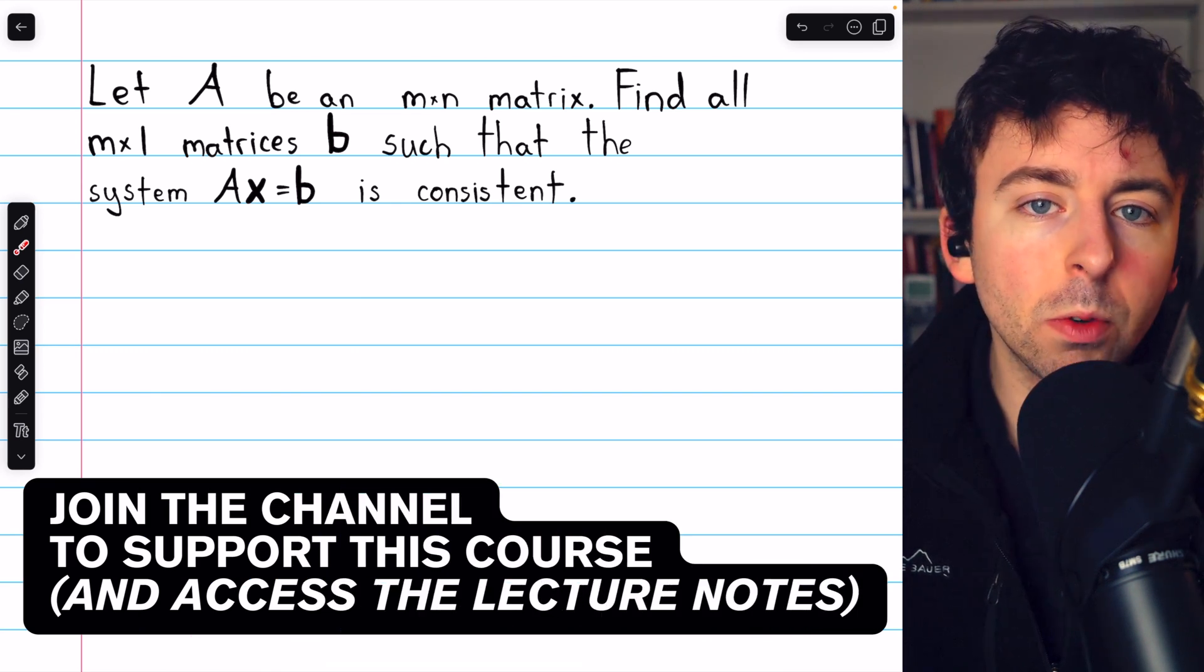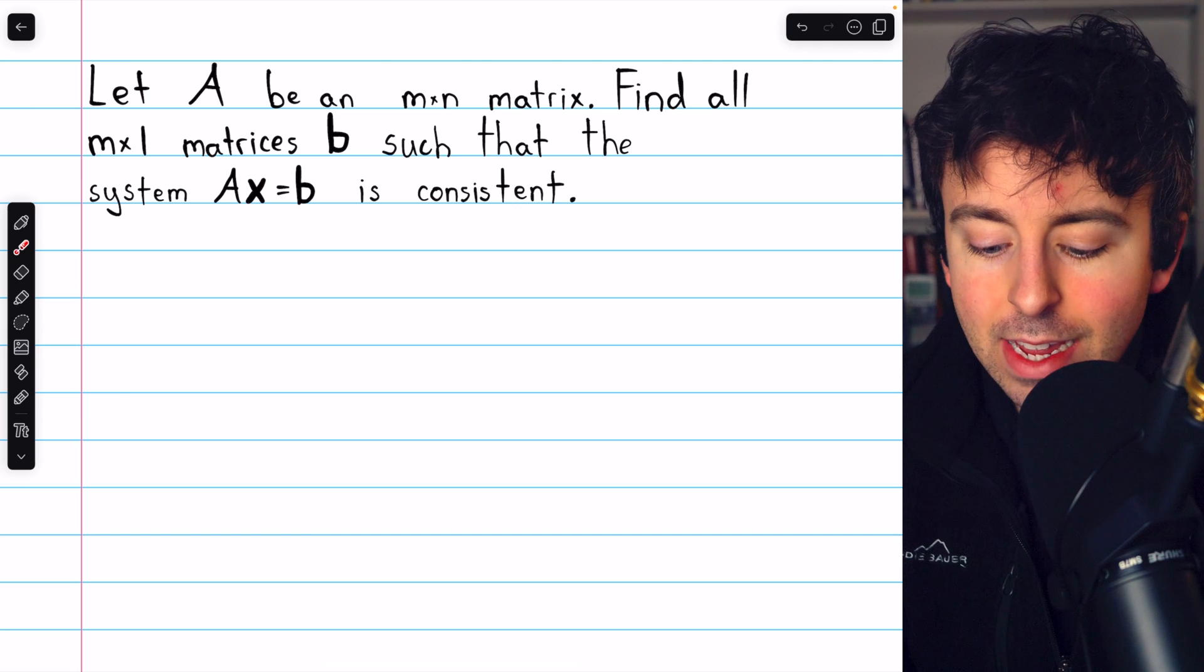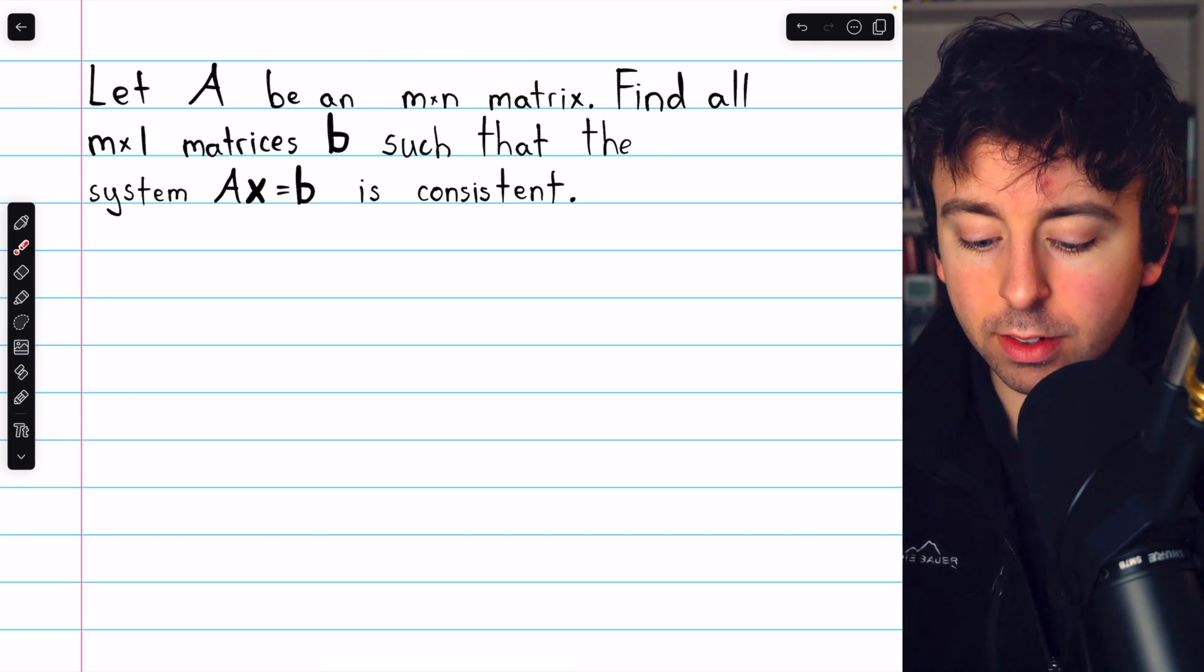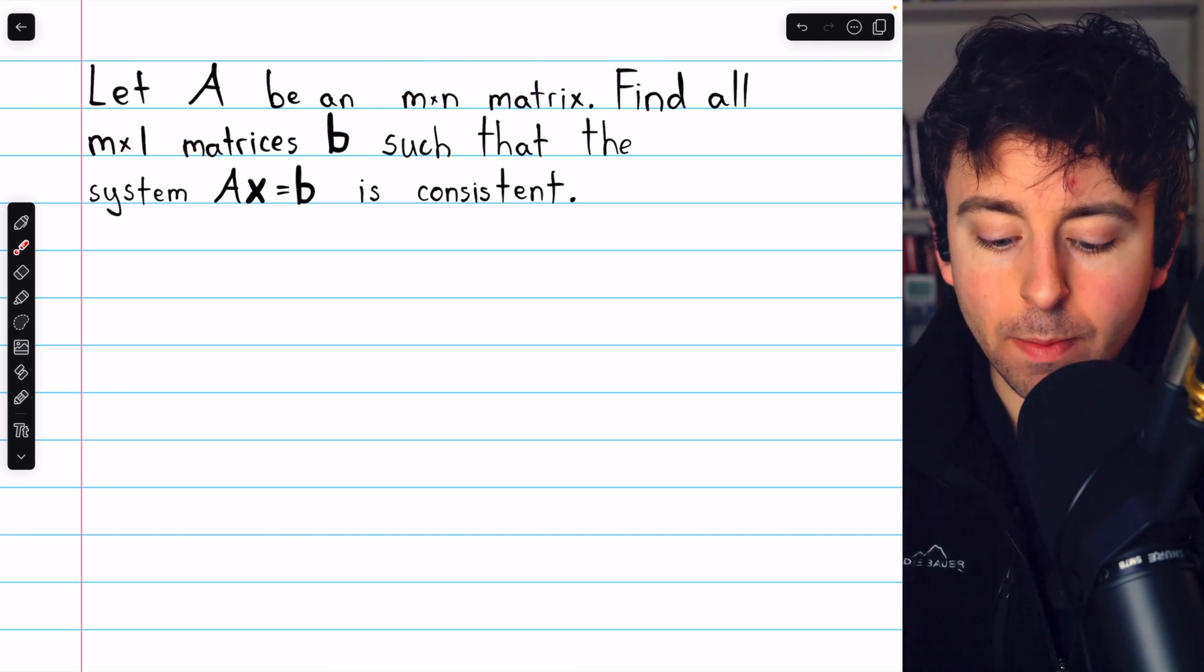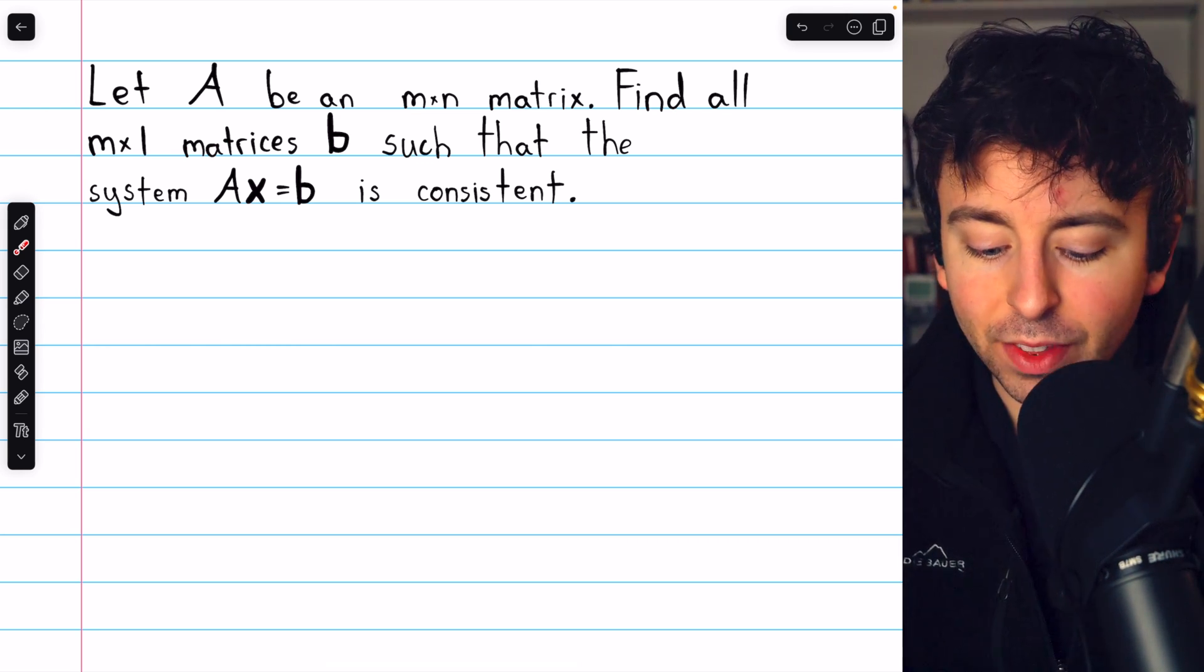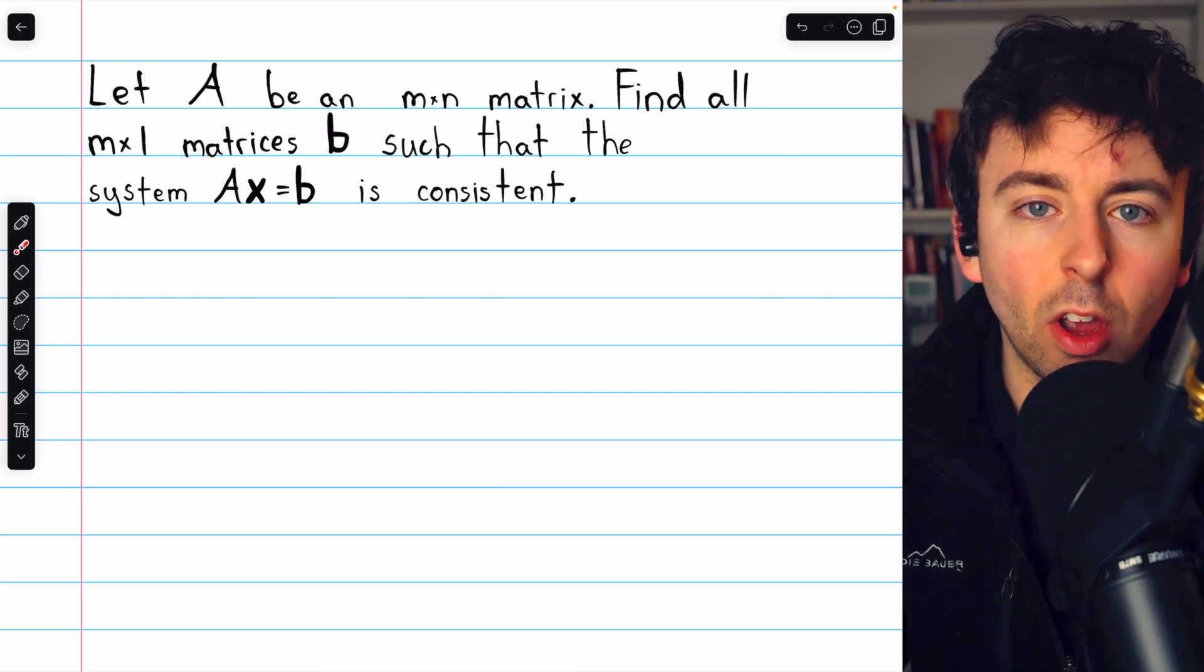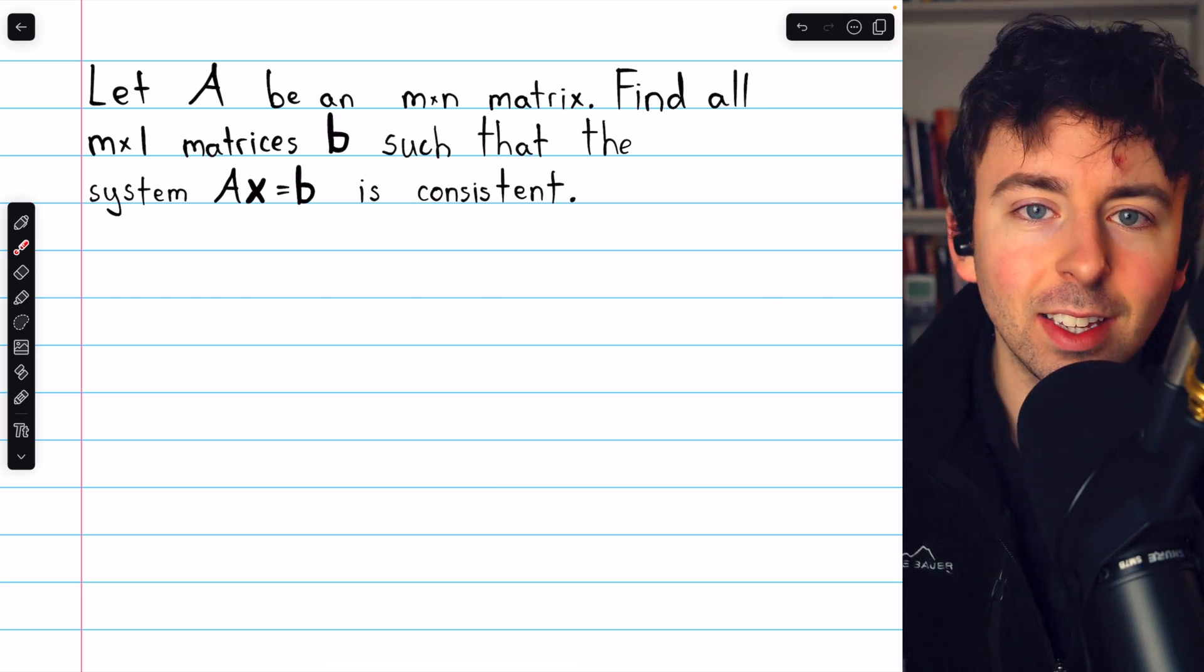Here's a sort of problem we'll encounter in linear algebra and need to be prepared to solve. If A is an m by n matrix and B is an m by 1 matrix, like a column vector, then how do we determine if the system Ax equals b is consistent? And if so, under what conditions is it consistent?